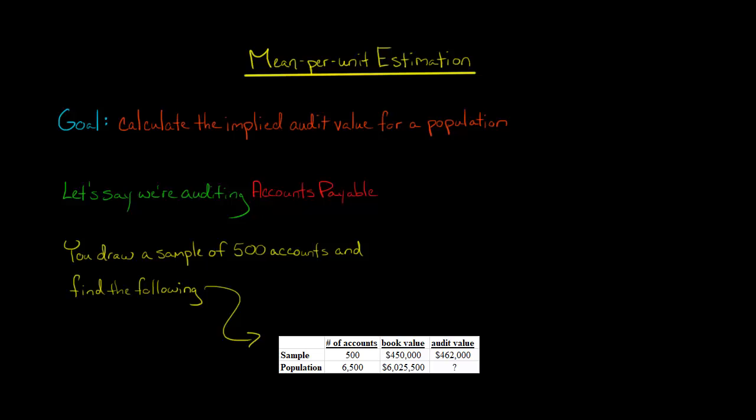In this video, I'm going to show you how to calculate the implied audit value for a population by using mean per unit estimation.